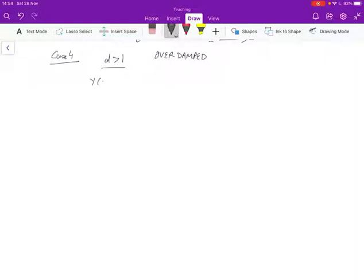To understand that, again, we'll go back to the Laplace transform of the output for a unit step input, which is given by k omega squared over s times s squared plus 2d omega s plus omega square.